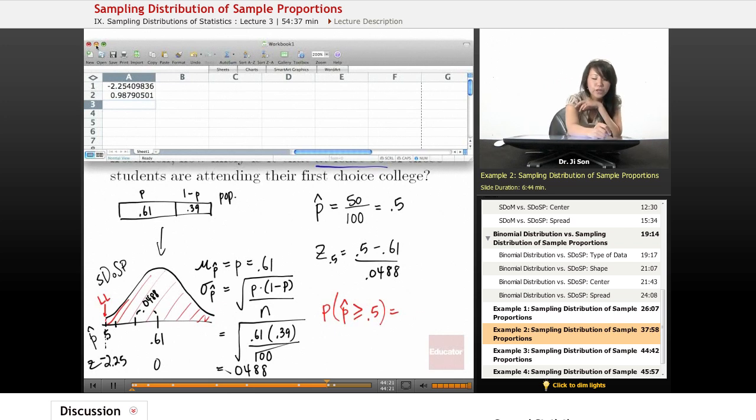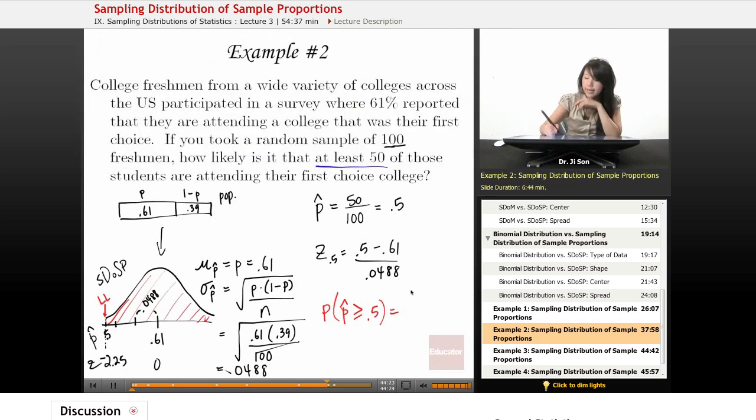And we should get 0.9879. So very, very close to almost everybody, 0.9879. So almost 99% of our samples should have at least 50% of those students attending their first choice college.